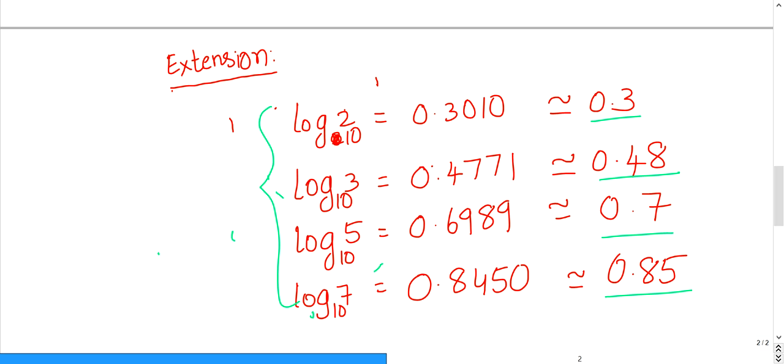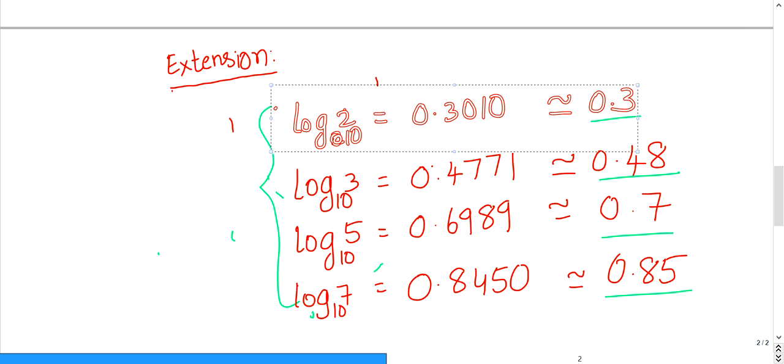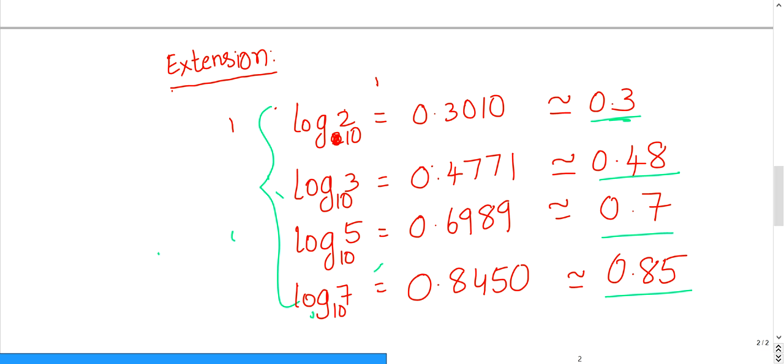I'll give you a simple technique. If you don't remember anything in the exam about log 2, 3, 5, 7, here's how you can recollect. Log 2: the next odd number to 2 is 3, so write it as 0.3. Log 3: the next odd number to 3 is 5, so write 0.5 or 0.48. In the worst case, 0.5.